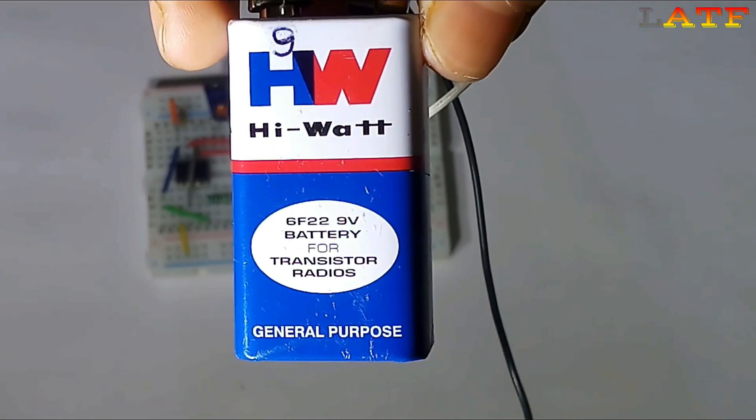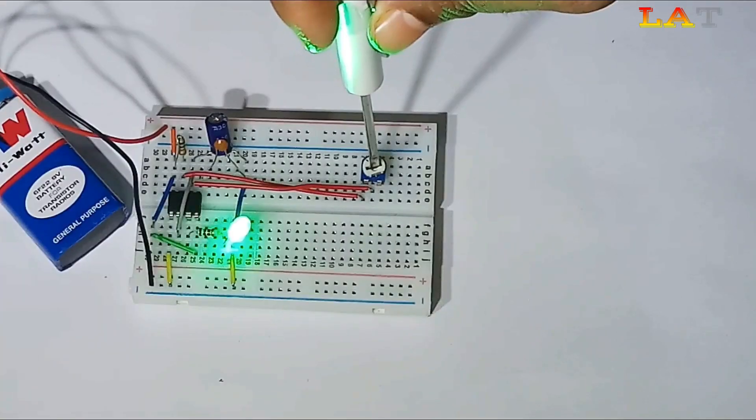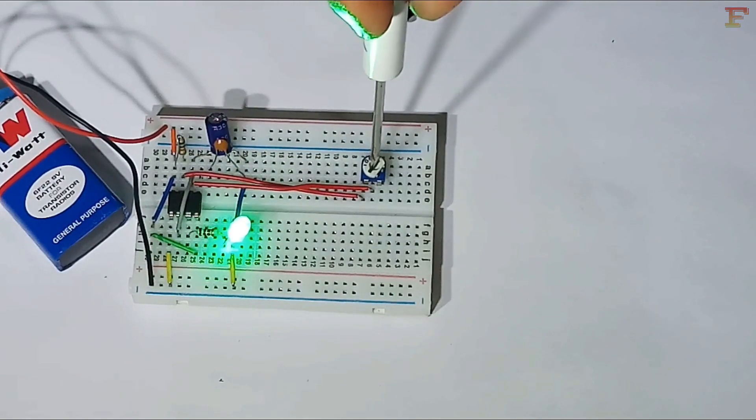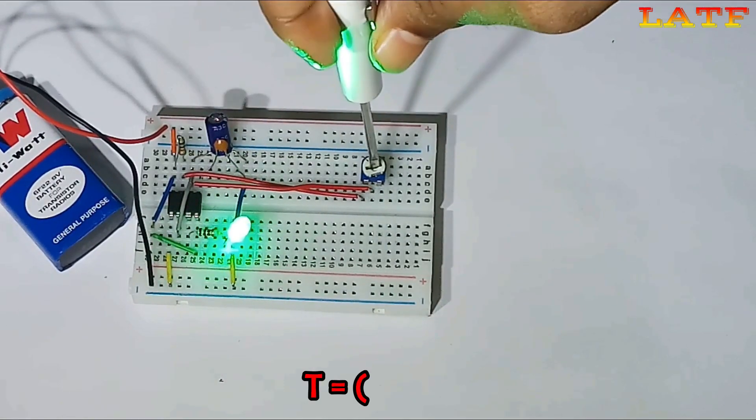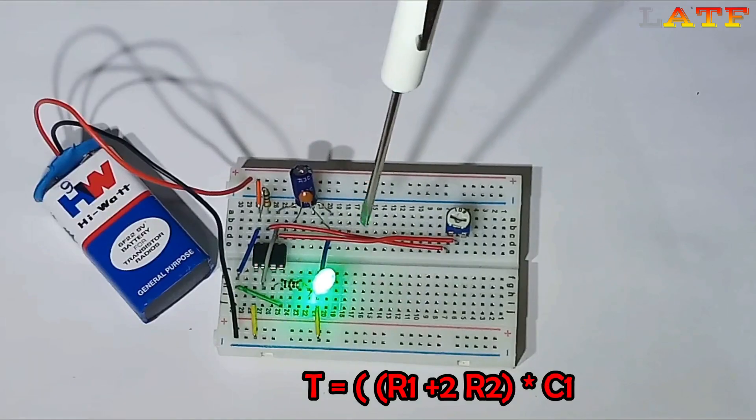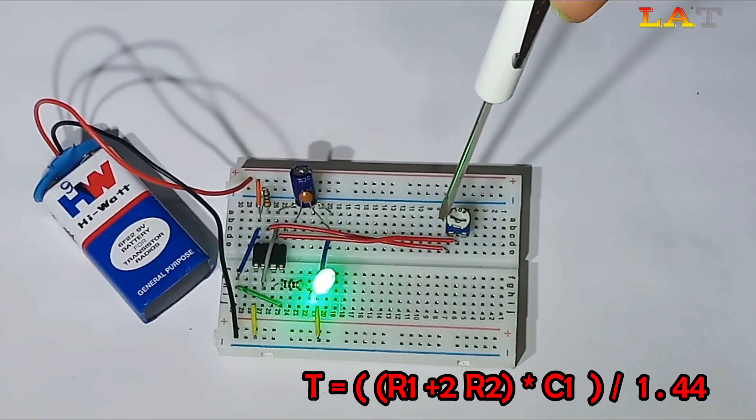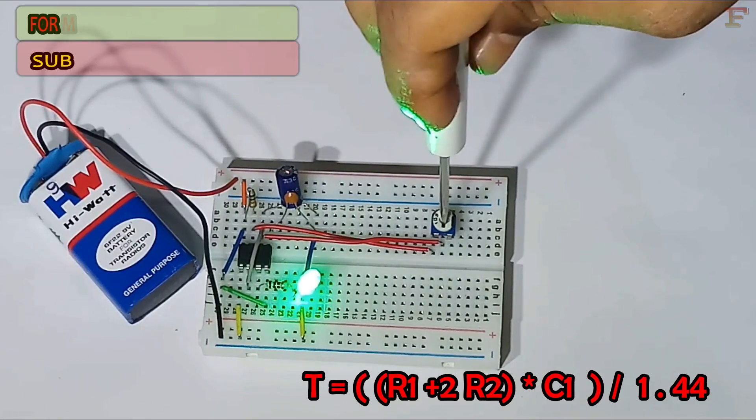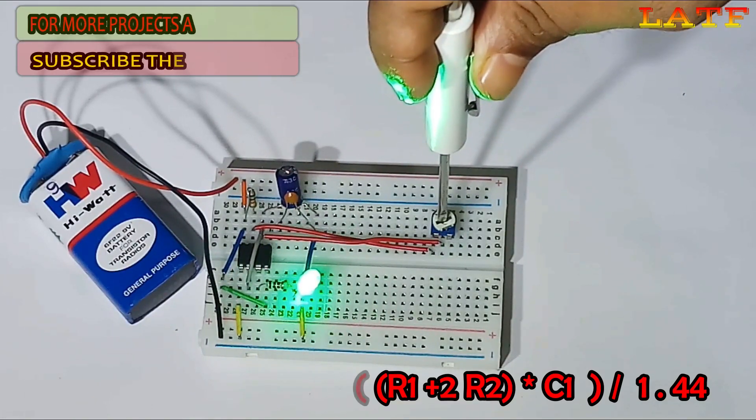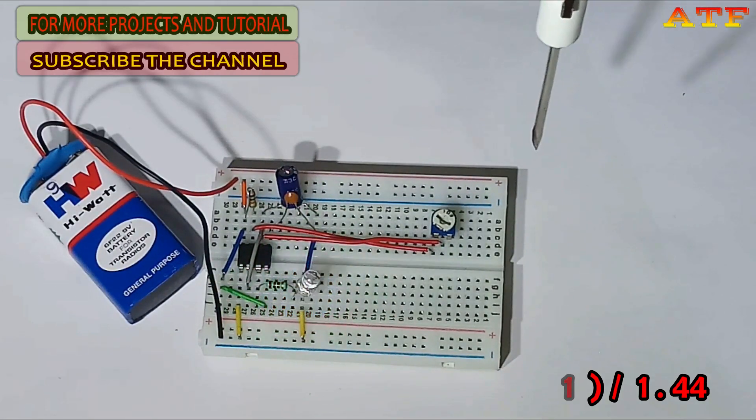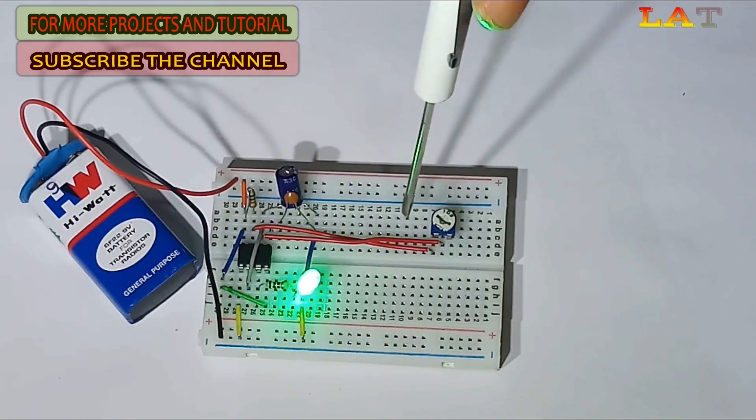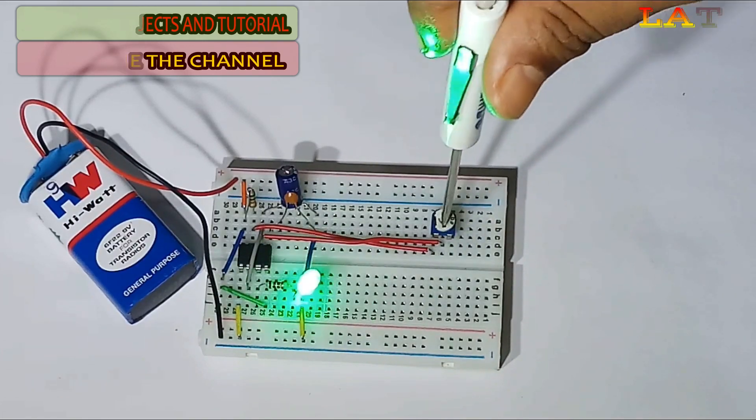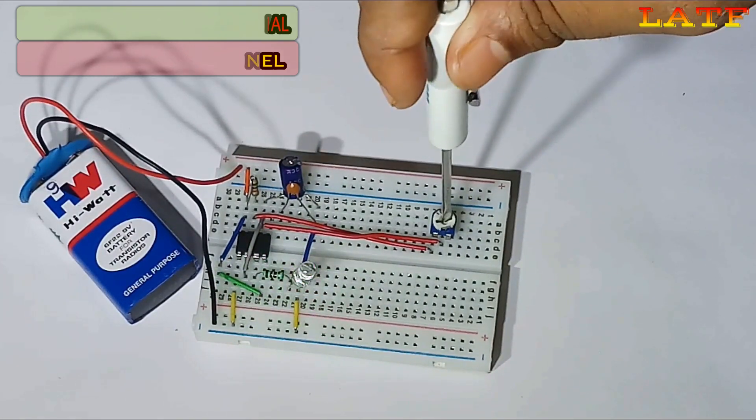Connect the 9 volt battery to the circuit. Now, it's time to test the module. You will observe that LED turns on and turns off at time period of T which is equal to 0.693 into R1 plus 2 R2 into C1. From this astable multivibrator mode of 555, you can generate a square wave pulse. Or, you can use this astable multivibrator mode of 555 to generate a clock pulse for your counter circuits.